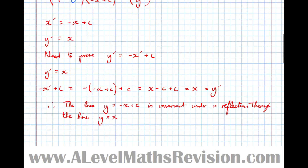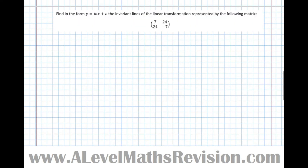So that's how to verify that a line is invariant under a given transformation. But it's much more difficult to actually find the invariant lines when you're given no more information. Let's have a look at an example where you're required to find the invariant lines from scratch — finding lines of the form y equals mx plus c that are invariant lines of the linear transformation represented by the matrix (7,24; 24,−7).